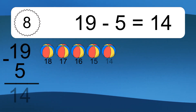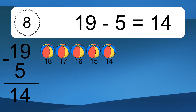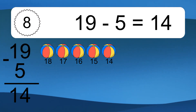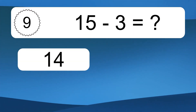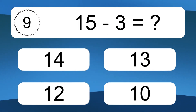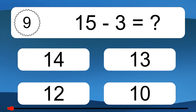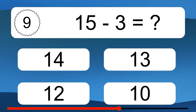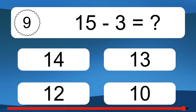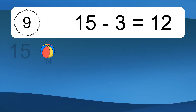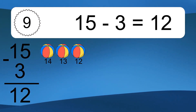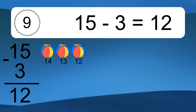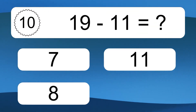19 minus 5 equals 14. Let's count it: 18, 17, 16, 15, 14. 15 minus 3 equals what? 15 minus 3 equals 12. Let's count it: 14, 13, 12. 19 minus 11 equals what?